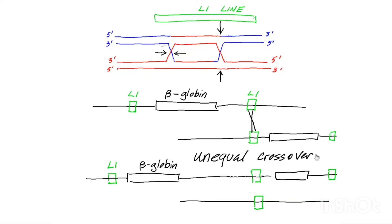Think of another situation where you have a primordial globin gene. You may already know that there are many different globin genes — there's an alpha globin, there's a beta globin, and so on. What may have happened long ago was that there was a single globin gene flanked by repetitive sequences like this LINE element L1. That primordial globin gene could have been duplicated into two different primordial globin genes, which then could evolve separately — one eventually becoming the beta globin gene and the other eventually becoming the alpha globin gene. So that's how unequal crossover works.